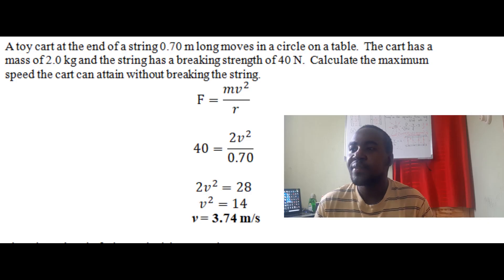Question one: A toy cart at the end of a string 0.70 meters long moves in a circle on a table. The cart has a mass of 2 kg and the string has a breaking strength of 40 N. Calculate the maximum speed the cart can attain without breaking the string.